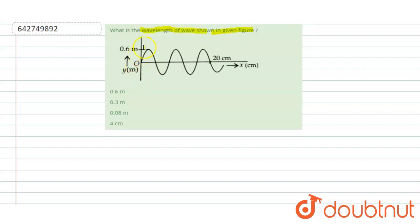There is a wave. As shown, this distance up to here is 20 cm. And along this is y, that is amplitude - the maximum displacement along y-axis is 0.6 meter.